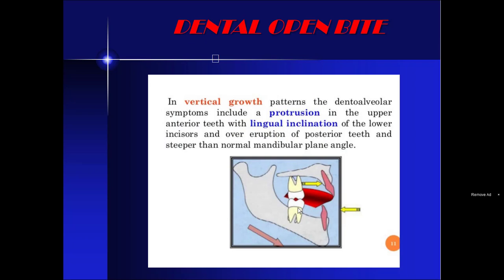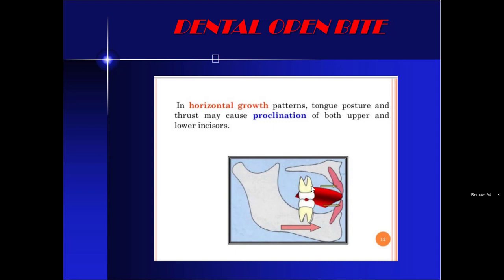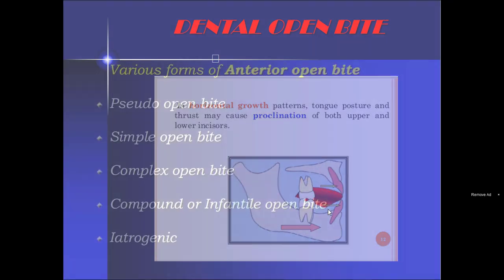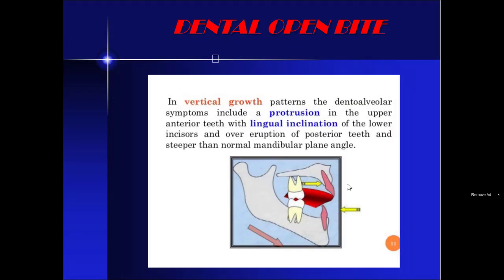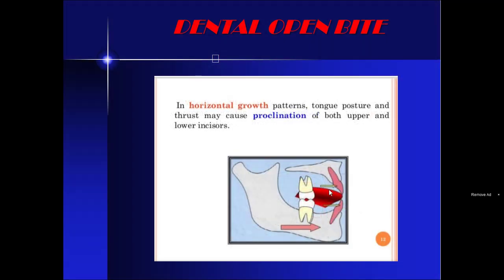In patients with vertical growth pattern, there is proclination of upper incisors and retroclination of lower incisors, with overeruption of posterior teeth. In patients with horizontal growth pattern, there is proclination of both upper and lower incisors.